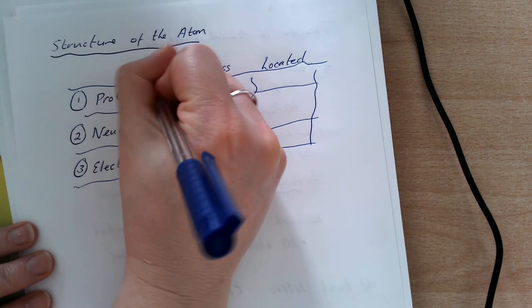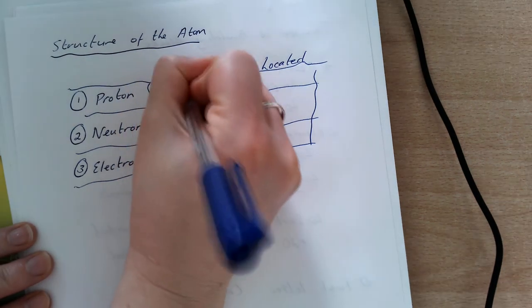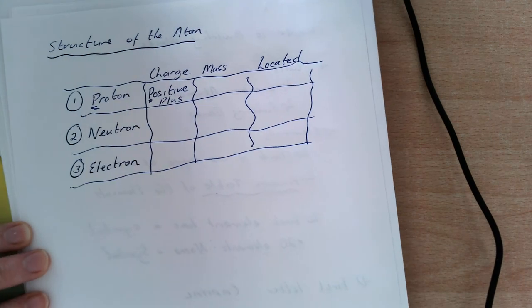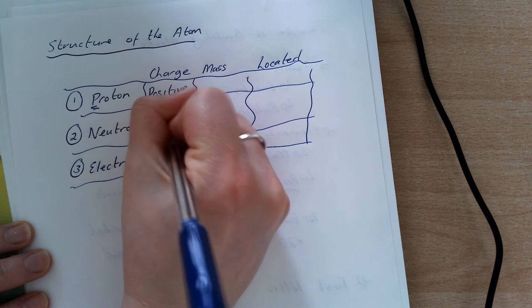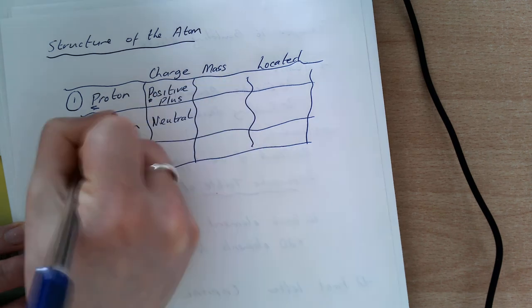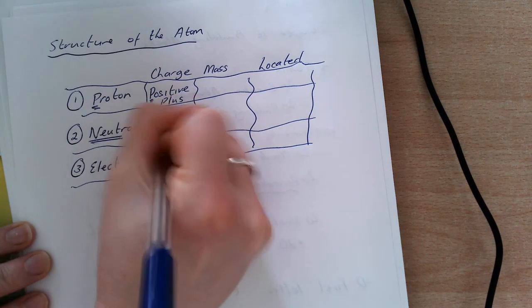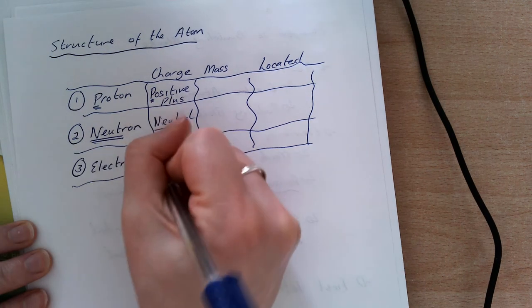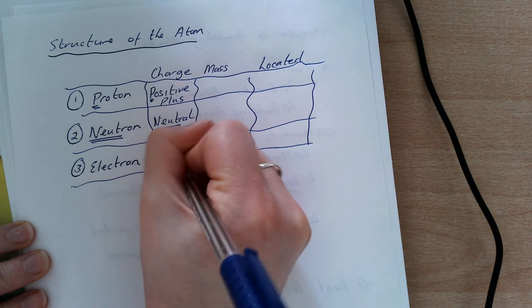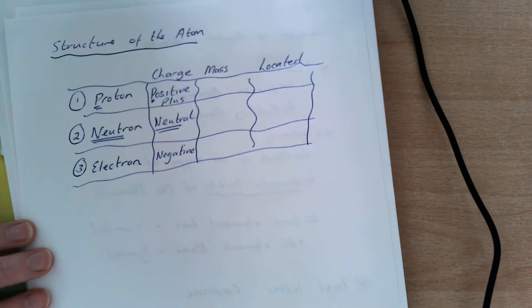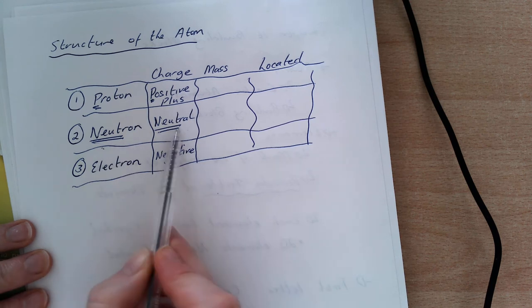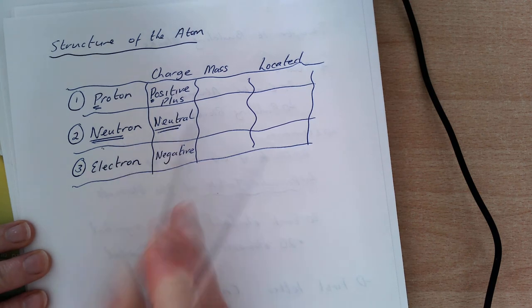So proton has a positive or plus charge. Remember P for proton, P for positive. Neutron has a neutral charge. So it's newt for neutron and newt for neutral. My electron then has a negative charge. Please be aware that it's N neutron, neutral, so newt and newt.